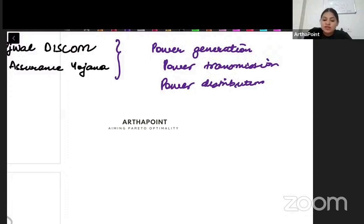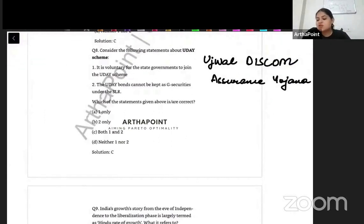Now going further, let's go back to the question that we had. So it says it is voluntary for state governments to join the Uday Scheme. That is absolutely correct. It's not something that is a compulsion. It's a voluntary thing. Do you want to voluntarily join this or not? And Uday Bonds cannot be kept as G-Securities. Correct. So, you know, what happens is bonds, basically, whenever someone wants to raise money, right, that is when they can go ahead and they can issue bonds, just as government bonds issued to public.